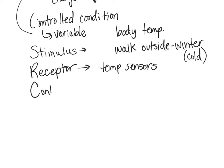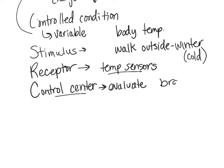The control center evaluates that input. It determines whether the cold is within an acceptable range or not. If it's just a little chilly, the brain might say it's okay and do nothing. But if it's really, really cold, the control center — our brain — determines something needs to be done, and it sends output to the effector.